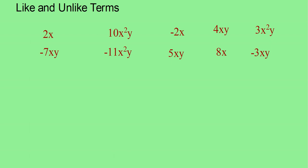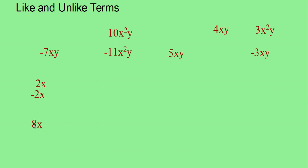First of all, let us look at what are like and unlike terms. Here you have a lot of terms of different algebraic expressions. Let me take the first one: 2x. Is there any term containing the variable x alone? Yes, here minus 2x and 8x. So these are all like terms. The terms having different variables, we can call as unlike terms.